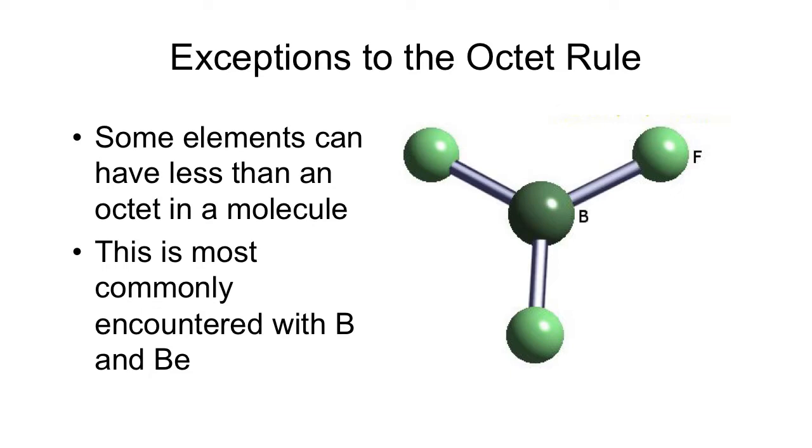We're going to start off with a couple elements that can have less than an octet. So boron and beryllium can actually be stable with less than 8 valence electrons. This example here shows boron trifluoride, which has 6 valence electrons. And beryllium can often get away with only having 4. So those are common exceptions to elements that can have less than an octet.